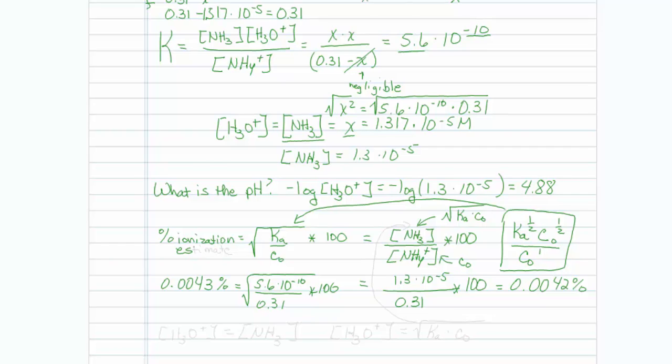This percent ionization is an estimate. Now since the percent ionization is so low, I could have checked that before I did the problem and also realize that since my conjugate base and ammonium ratio is 1 to 1, I could have actually used the shortcut formula for determining hydronium ion concentration. That shortcut formula is hydronium is equal to the square root of Ka times Co, which as pointed out earlier, which is exactly the same formula I used to get ammonium and hydronium when I assumed that x was negligible. A little longer than it had to be, but hopefully now the relationship is understood.